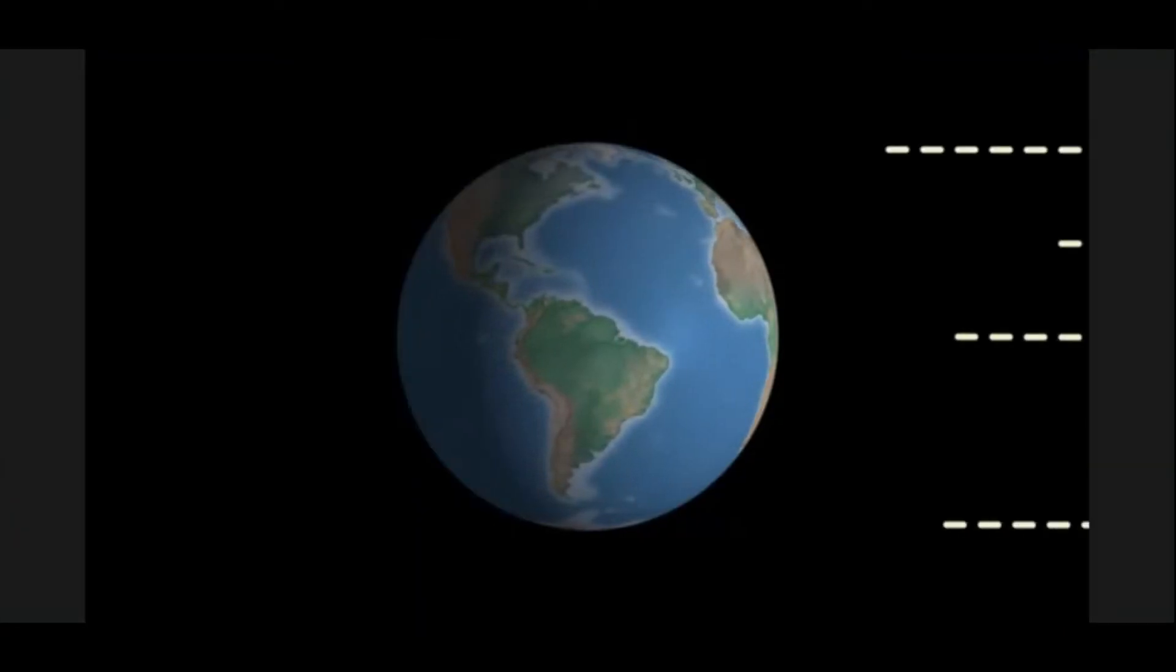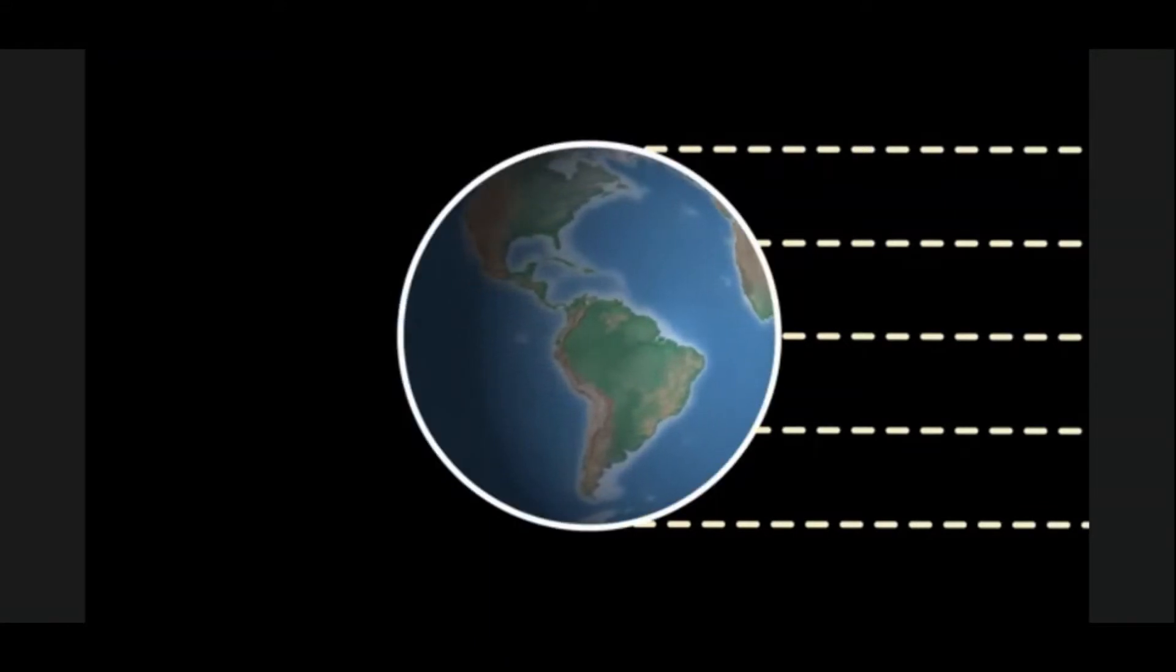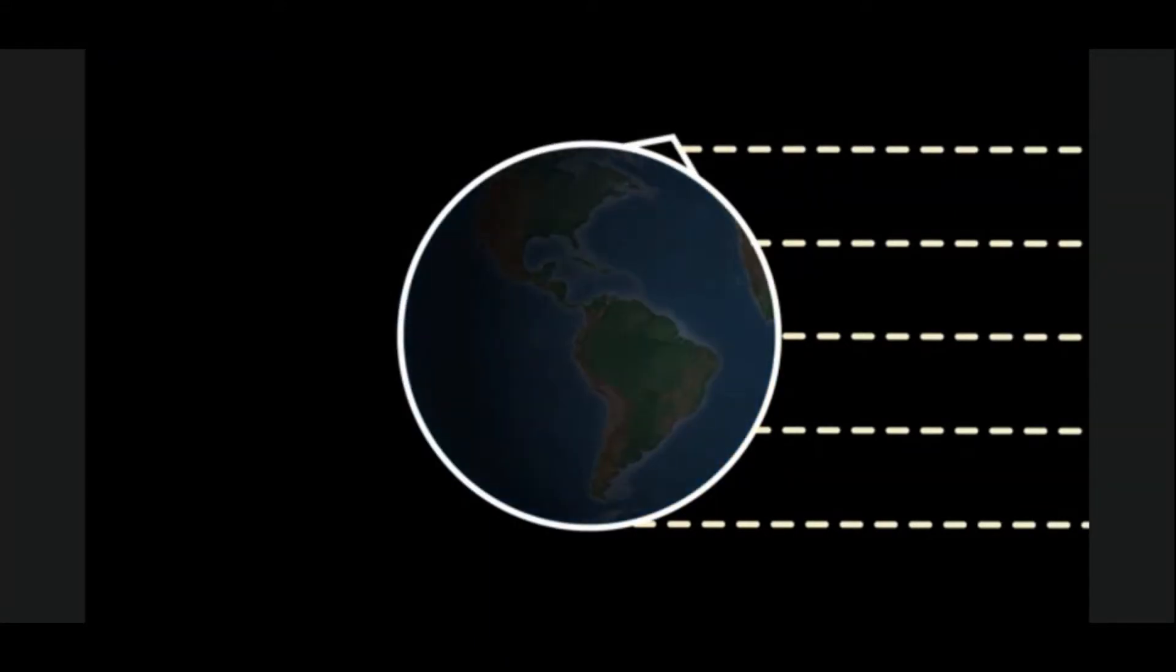When solar radiation intercepts the Earth, the spherical nature of our planet causes south-facing slopes in the northern hemisphere to receive more direct solar radiation than north-facing slopes. This pattern is reversed in the southern hemisphere with north-facing slopes receiving more sunshine.